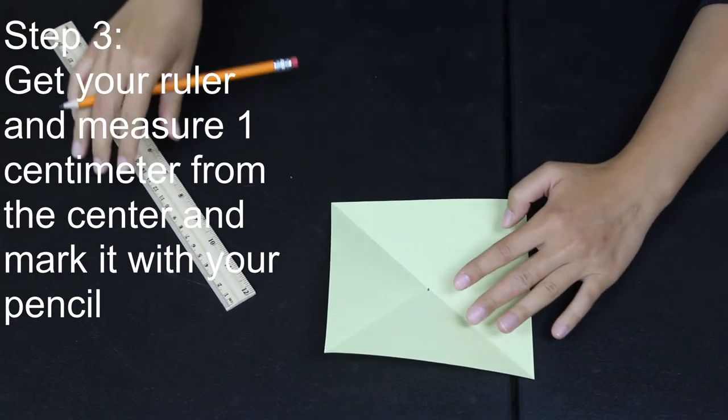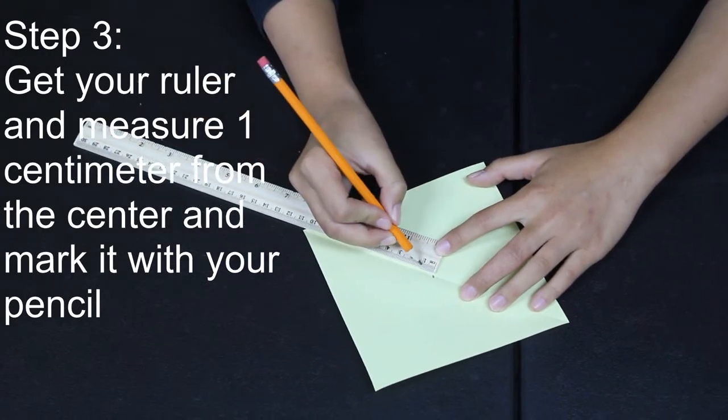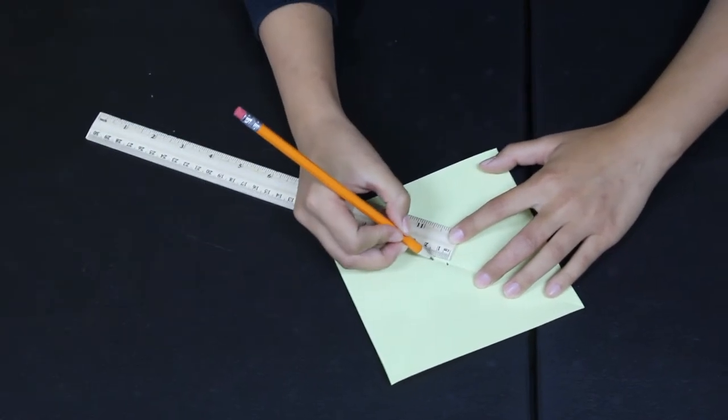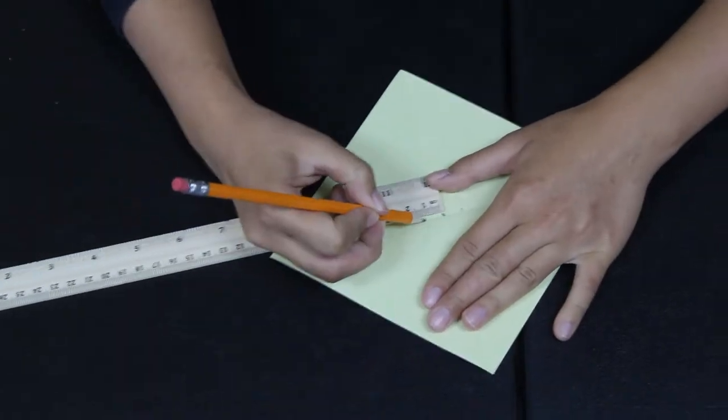We're going to take a ruler and measure out one centimeter away from the dot on the X toward the end of the paper and we're going to do that for all four lines. Remember one centimeter.